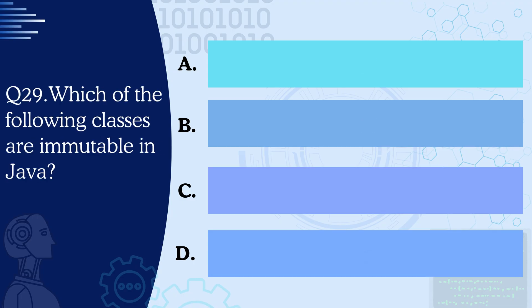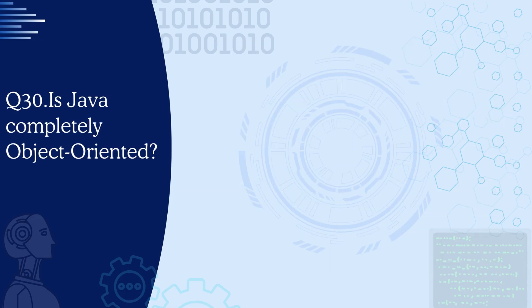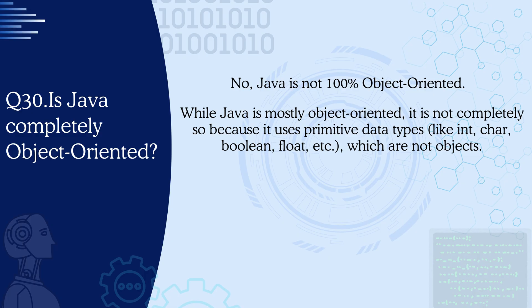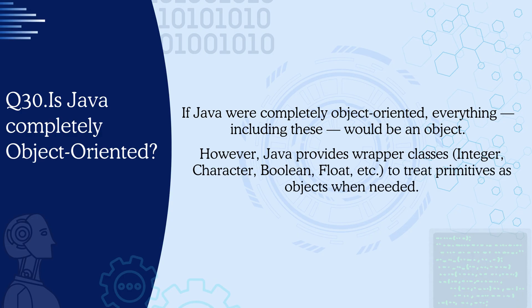Question 29: Which of the following classes are immutable in Java — String, StringBuilder, StringBuffer, or all of the above? The correct answer is String. Even though String is immutable, StringBuilder and StringBuffer are not. Question 30: Is Java completely object oriented? The correct answer is no — Java is not 100% object oriented. While Java is mostly object oriented, it uses primitive data types like int, char, boolean, float, etc., which are not objects. However, Java provides wrapper classes like Integer, Character, Boolean, Float — starting with a capital letter — to treat these primitive data types as objects when needed. But since primitive types still exist, Java can't be called completely object oriented.